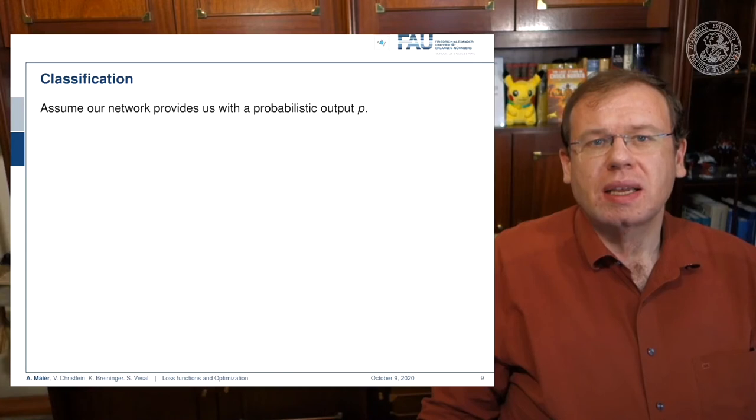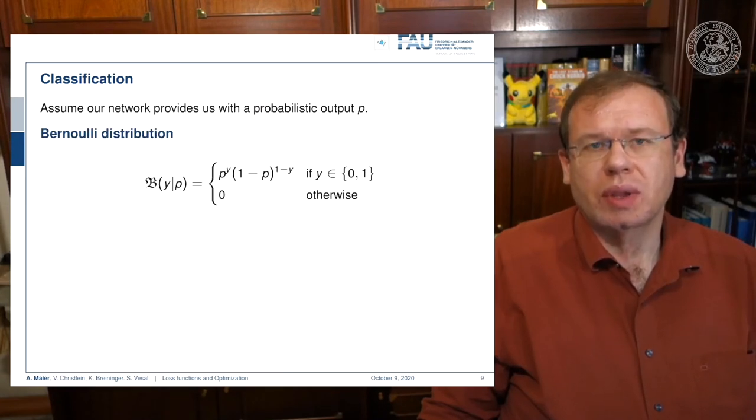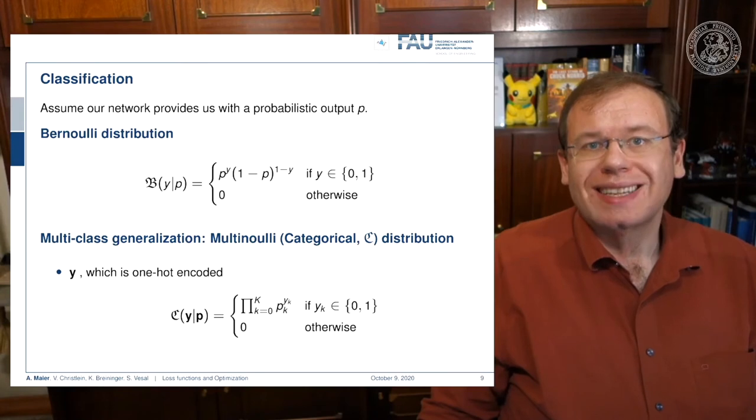Now let's assume that we want to classify. Then our network would provide us with some probabilistic output P. Let's say we classify only into two classes. We can model this as a Bernoulli distribution where we have classes 0 and 1. Of course, the probability of the other class is simply 1 minus P. This gives us the probability distribution P to the power of Y times 1 minus P to the power of 1 minus Y. Typically we don't have only two classes, so we need to generalize to the multinomial or categorical distribution. Then Y is typically modeled as a one-hot encoded vector. We can write down the categorical distribution as the product over all classes of the probability for each class to the power of the ground truth label, which is either 0 or 1.